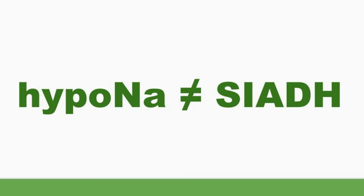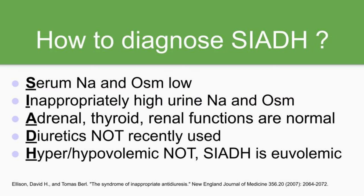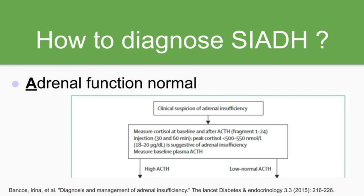Hyponatremia is not equal to SIADH. There are many causes of hyponatremia — SIADH is only one of them. I have a mnemonic to remember the diagnosis of SIADH, namely SIADH. S — serum sodium and osmolality low; inappropriately high urine sodium and osmolality. A — adrenal, thyroid, and renal functions are normal. D — diuretics not recently used. H — hyper- or hypovolemia is not the case. SIADH is a euvolemic state. It is not easy to fully diagnose SIADH — you need to demonstrate normal adrenal function by performing a short Synacthen test.